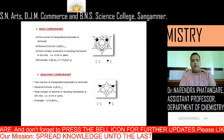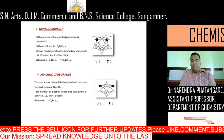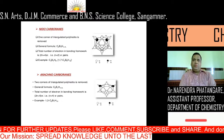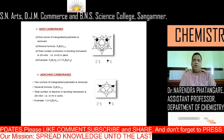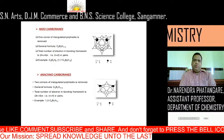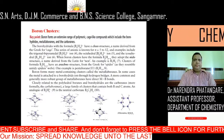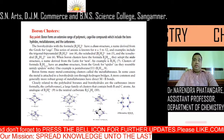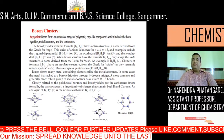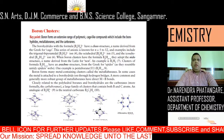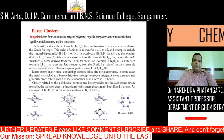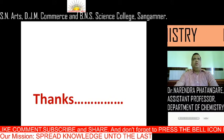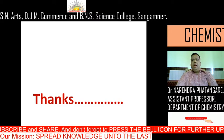Third, arachno carboranes are formed when two corners of the triangulated polyhedron are removed. The general formula is C2BnHn+6. The total number of electrons in the bonding framework is 2n+6, that is n+4 electron pairs. For example, C2B7H13. Boron clusters are an extended range of polycyclic cage-like compounds which include boron hydrides, metalloboranes, and carboranes. These are useful for determining the geometry of different borohydrides, carboranes, and boron clusters.